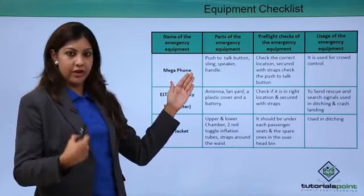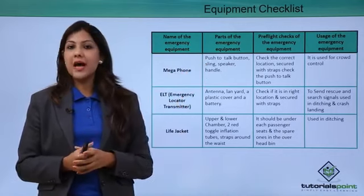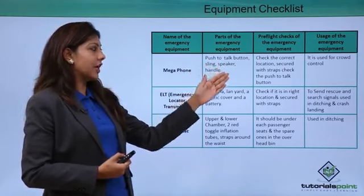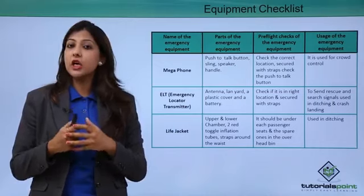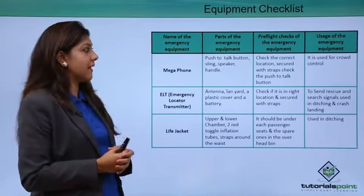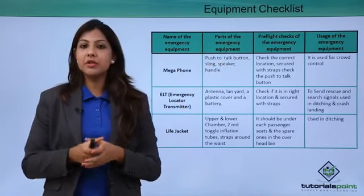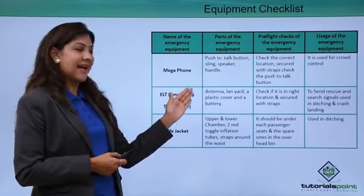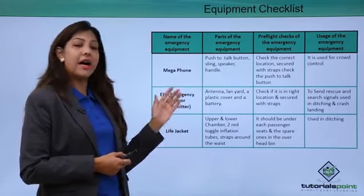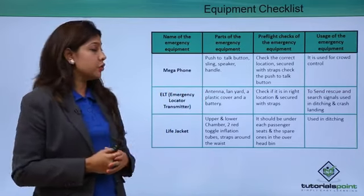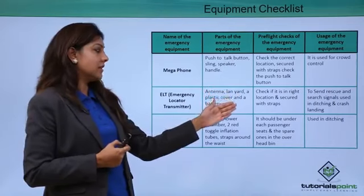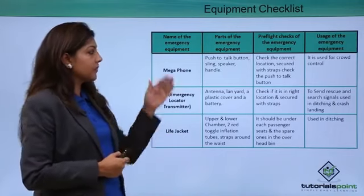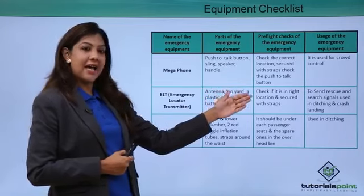The megaphone has a push-to-talk button, a sling to wear around yourself, a speaker, and a handle. The crew checks it is secured with straps and the push-to-talk button is working effectively. It is used for crowd control during an emergency on land or in water. The ELT — Emergency Locator Transmitter — has an antenna, a lanyard, a plastic cover, and a battery. The crew checks it is in the right location and secured with straps. It is generally kept in the aft of the cabin in the overhead bin compartment, and is used for search and rescue signals during ditching or crash landing.